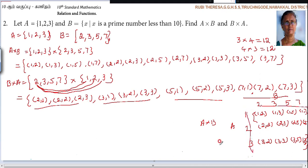If you want to write B cross A, you can write the A. Write the elements here: 2, 3, 5, 7. Here what? 1, 2, 3.